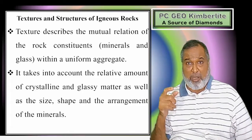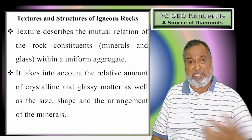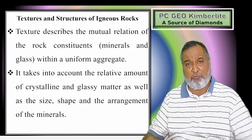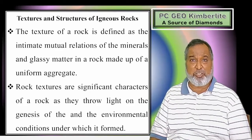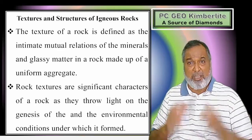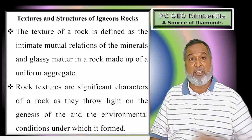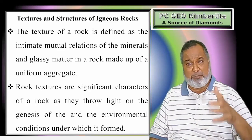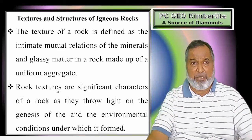When making an account of texture, we consider the relative amount of crystalline matter - how much crystals are there and how much glass is there. Then we see their shape, size, and arrangement. So the texture of a rock is defined as the intimate mutual relation of the minerals and glassy matter in a rock made up of uniform aggregates. Rock textures are significant characters of the rock - they throw light on the genesis and the environmental conditions under which that particular rock was formed.